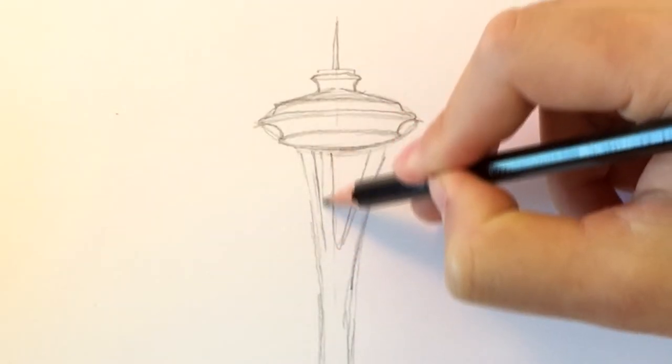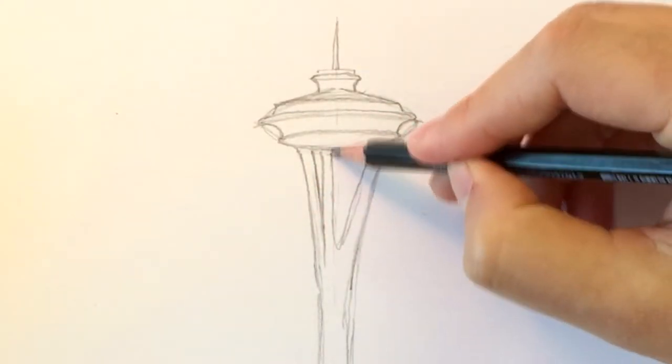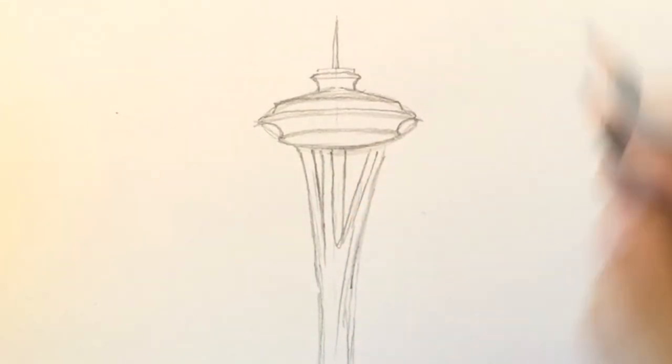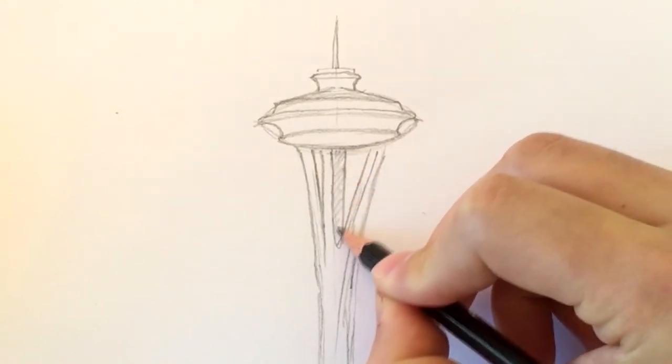So those are the legs connecting the buildings, including the restaurant and the observation roof. And in the middle, there is the elevator going all the way down.